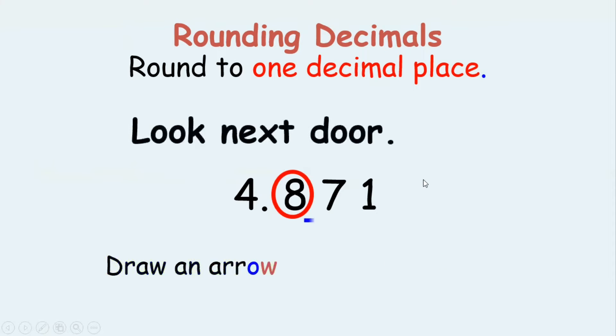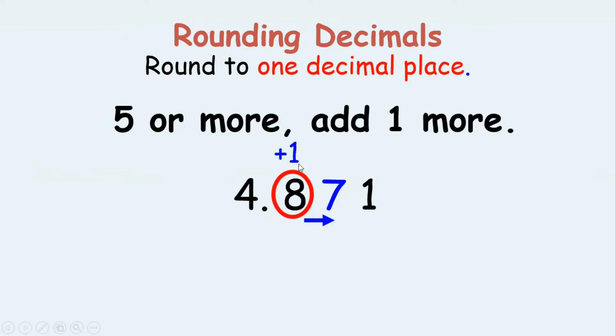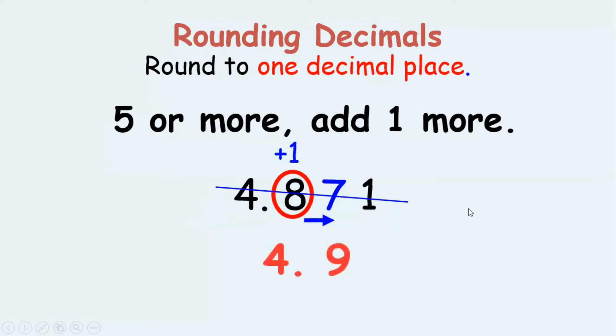Since it is five or more, look next door, it is seven. The next door number is seven, which is five or more. So then we add one to the previous digit. That is, we add one to eight. So adding one to eight, we get this number as 4.9. Got it? Easy.